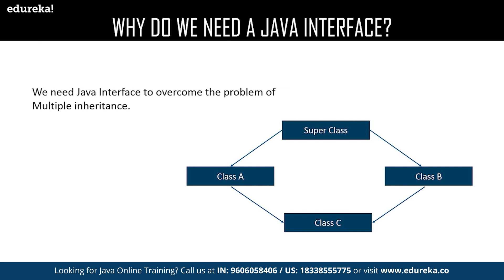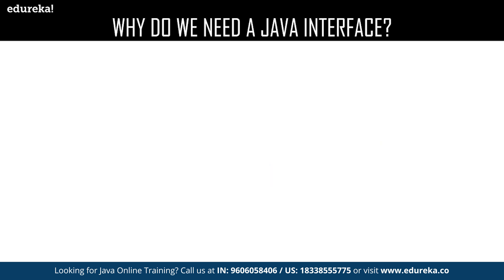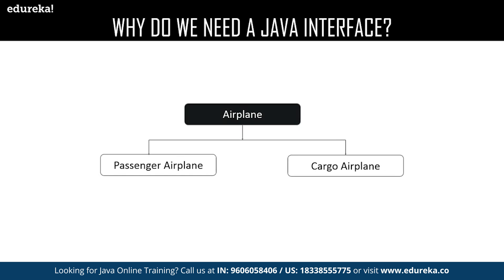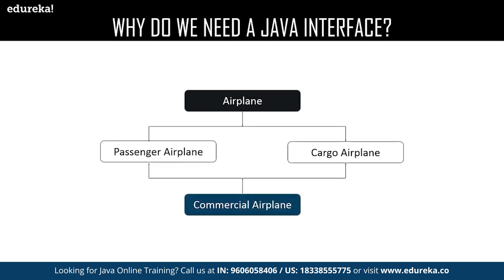That's when the interface comes into the picture. Using interface, we can achieve multiple inheritance — here we are inheriting one class and implementing the behavior of another class. Let me explain with an example. Consider an airplane which requires both the properties of carrying huge cargo and passengers. We have two planes: one is capable only to carry passengers and the other only to carry cargo. Now we need to carry both passengers and cargo in one single plane, which seems impossible based on how Java works, as it cannot access the properties of two different parent classes at the same time.